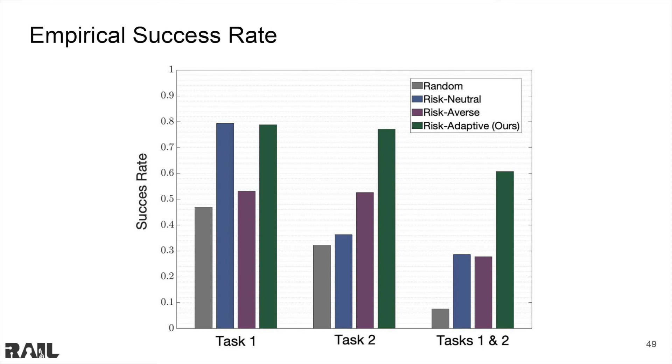Now that we have simulated this robot team 10,000 times and found the empirical success rates for task 1, task 2, and the combined task 1 and 2 at the same time, we can see that our risk adaptive method in green consistently improved upon the success rate for all the tasks when compared to the baseline algorithms. This means that our method was more consistently able to allocate robots towards tasks such that they were a success and the trait requirements were met.